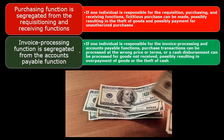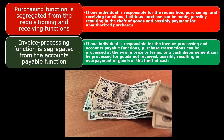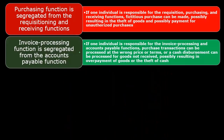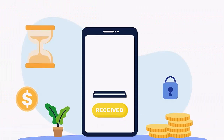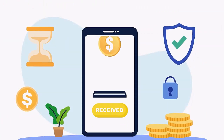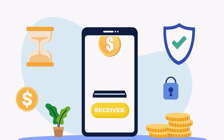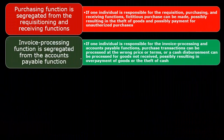It would be possible to have a fictitious receipt — when no goods were actually received — and still record it in accounts payable as if it was received, possibly resulting in overpayment of goods or theft of cash. You can imagine that if somebody was in charge of both those functions, they could set up a process, work with fictitious vendors or something like that, and be able to commit some type of fraud.